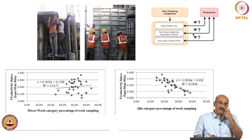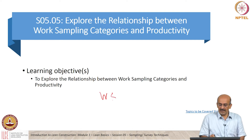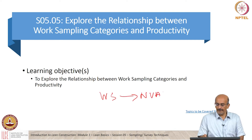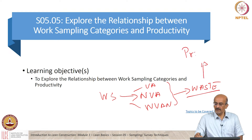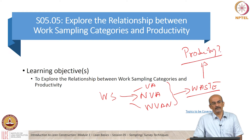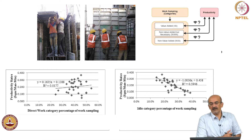Ultimately, work sampling has to lead to waste. We can see some ways right now because work sampling leads to non-value added, which goes to waste. Now the question is how does this relate to productivity — this is a study we did some years back, and we asked ourselves this question because it is a relevant question to ask.